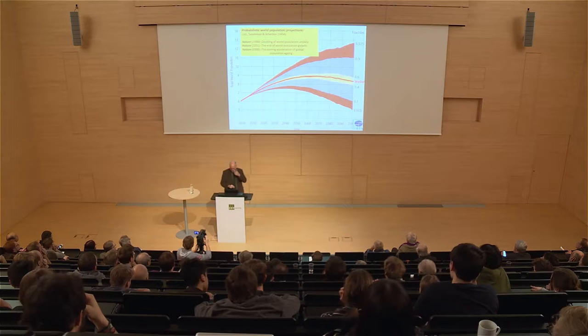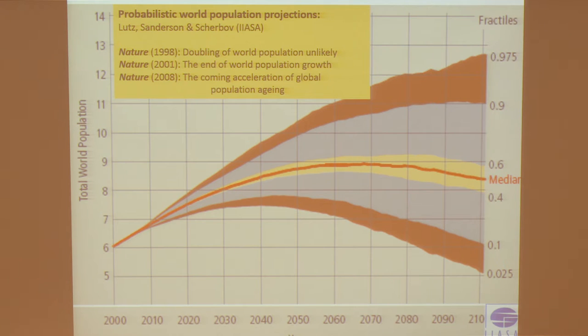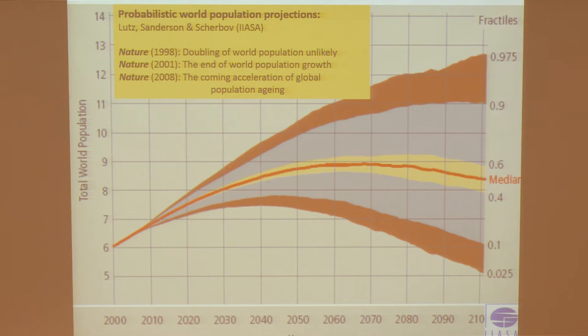A lot of uncertainty depends essentially on the future of fertility. At IIASA, we've been working on methods of probabilistic population projections — we were the first to apply this on a global scale. If you look at the titles of three articles in Nature over a decade, they reflect the changing concern about population. In the mid-1990s, when everybody talked about a certain doubling of world population, with these probabilistic projections we would say: doubling of world population, unlikely. It's still going to grow, but it's not a high probability it will double.